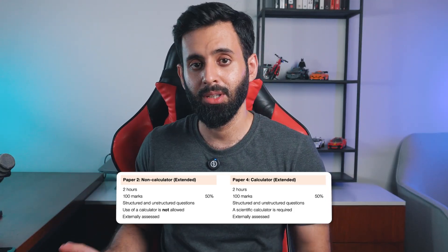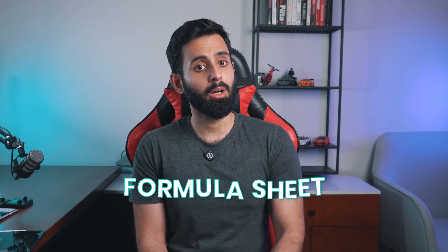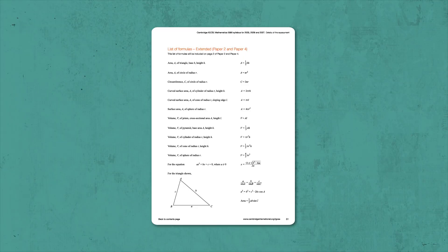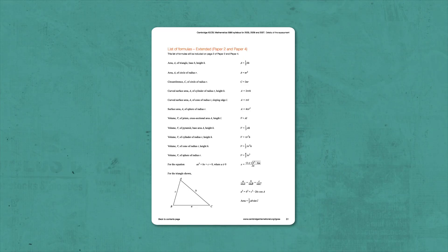IGCSE students have always been lucky in having both papers with a calculator. However, the good news is that you now get a formula sheet, which means you don't have to memorize formulas for volume and surface area of many shapes — they will be given to you. So that's it for the change in paper pattern.